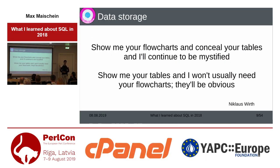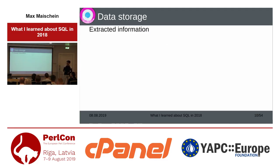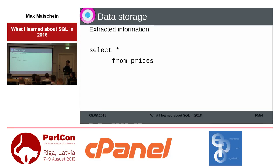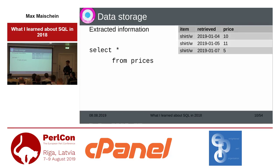First, I want to tell you a bit about how I actually store the data. There's a great quote: 'Show me your flowcharts and conceal your tables and I'll continue to be mystified. Show me your tables and I won't usually need your flowcharts — they'll be obvious.' I'm storing the extracted information in a table named 'prices'. It is mostly the item ID — here a white shirt — the date when the information was retrieved, like the beginning of 2019, and some price: 10 euro, 11 euro, 5 euro, for example.